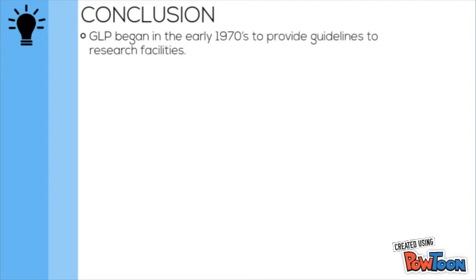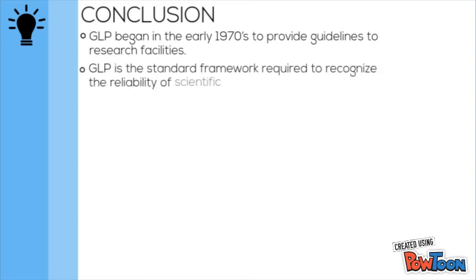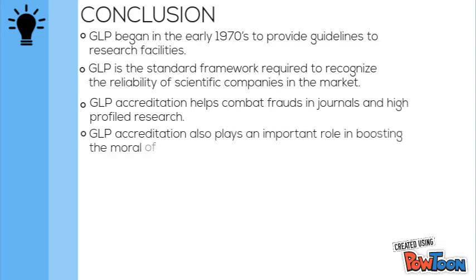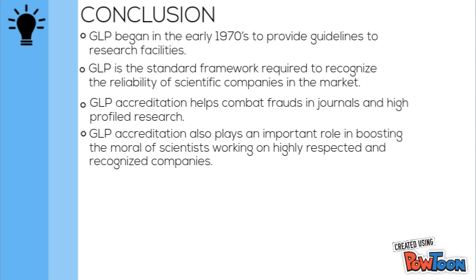Overall, GLP can be summarized as follows. GLP began in the early 1970s to provide guidelines to research facilities, helping maintain the accuracy and quality of gathered data. GLP is a standard framework required to recognize the reliability of scientific companies in the market. GLP accreditation helps combat fraud in journals and high-profile research. It also plays an important role in boosting the morale of scientists working in highly respected and recognized companies. The regulatory authorities help maintain standards, ensuring facilities follow legal laws concerning research documentation.